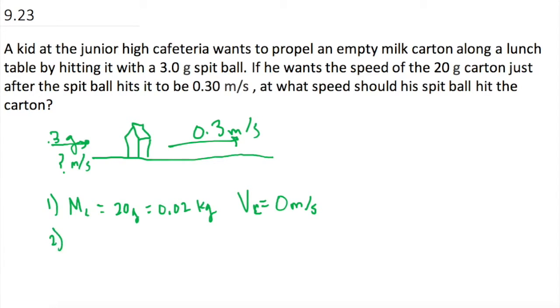The spitball is number two. The mass of the spitball is three grams, which is 0.003 kilograms. The initial speed of the spitball is what we're looking for.